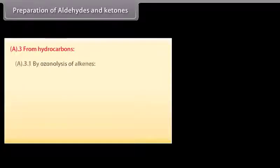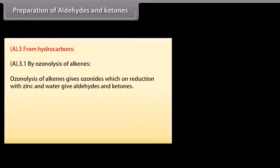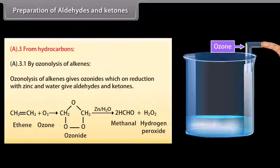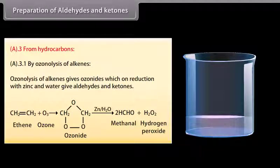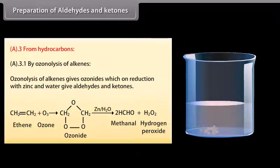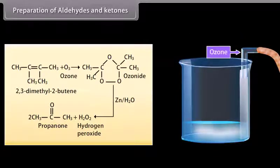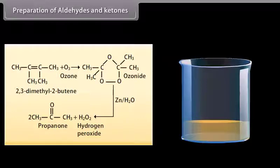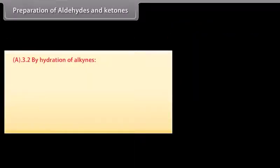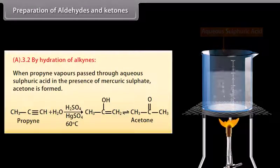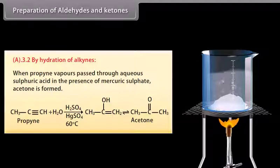Preparation from hydrocarbons by ozonolysis of alkenes: ozonolysis gives ozonides which on reduction with zinc and water give aldehydes and ketones. Ozone reacts with ethene to form an ozonide intermediate; on treatment with zinc and water, methanal and hydrogen peroxide are formed. Ozone reacts with 2,3-dimethyl-2-butene to form an ozonide; on treatment with zinc and water, propanone and hydrogen peroxide are formed. By hydration of alkynes: when acetylene vapors are passed through aqueous sulfuric acid in the presence of mercuric sulfate, acetaldehyde is formed.